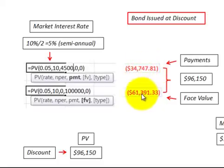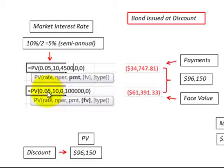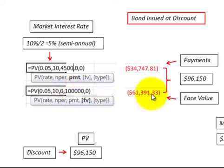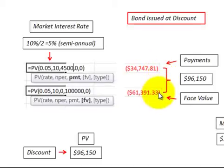The next value I determined was the maturity value or face value of the bond discounted back. We use the same market interest rate, number of periods, and put in the future value to discount that back. It came to $61,391. Adding both the payments and the discounted principal amount, I got $96,150.